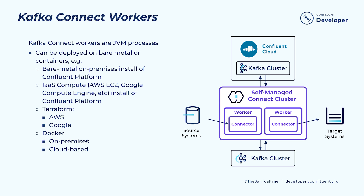Ultimately, Kafka Connect workers are just JVM processes. You can deploy on bare metal or containers. A few options present themselves: you're free to run a bare metal on-premises install of Confluent Platform. For those leveraging infrastructure as a service, you may install Confluent Platform on those resources. Terraform is an option on a couple of cloud providers. And of course, there's Docker, which you can use for both on-prem and cloud-based installations.